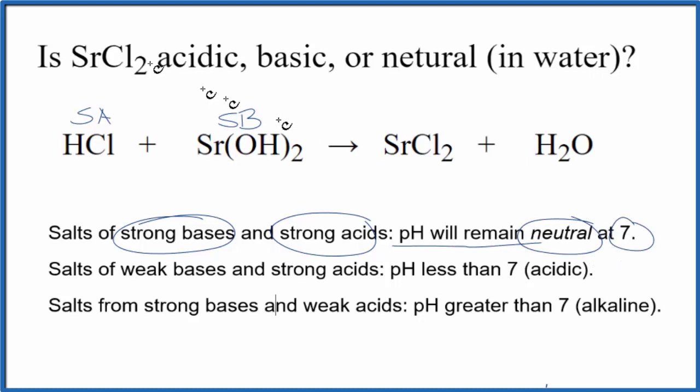So according to our rules, when we put strontium chloride in water, the resulting solution should be neutral and have a pH of 7. This is Dr. B, and thanks for watching.